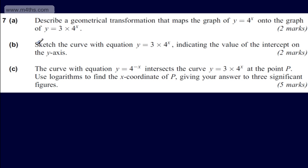This is question number 7. In part A, we're asked to describe a geometrical transformation that maps the graph of y equals 4 to the x onto the graph of y equals 3 times 4 to the x. The question carries two marks.